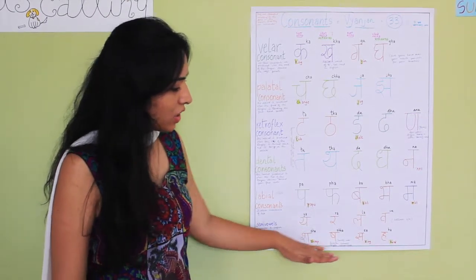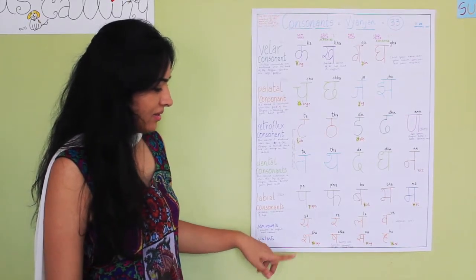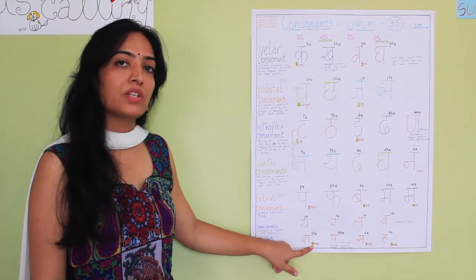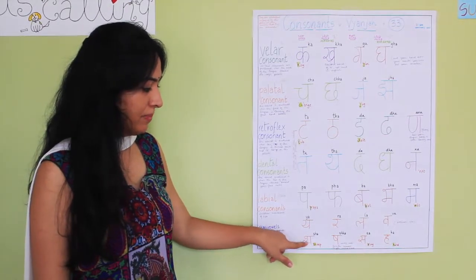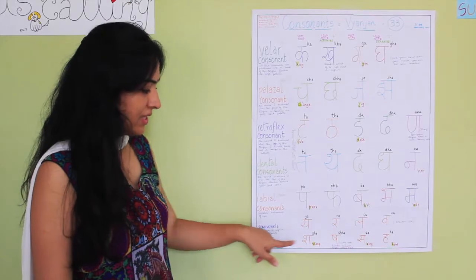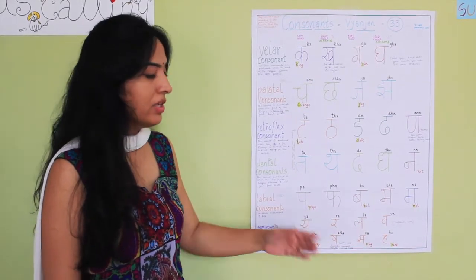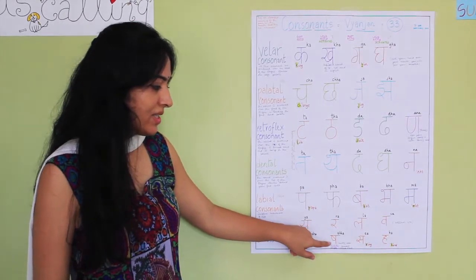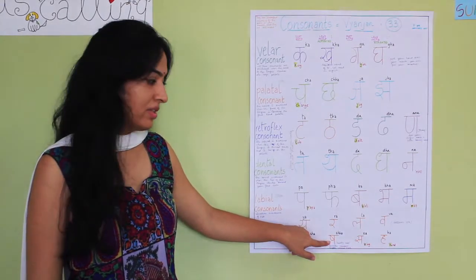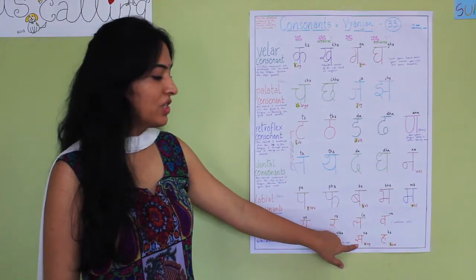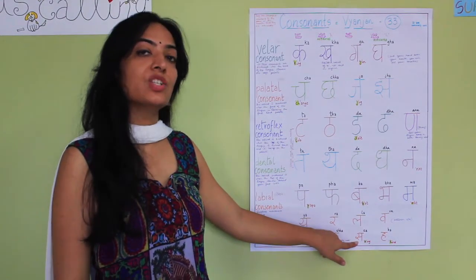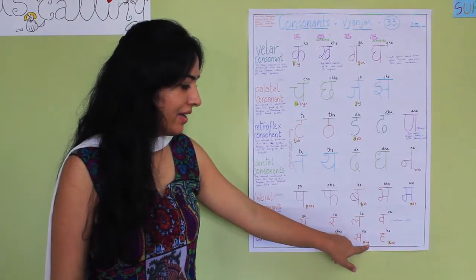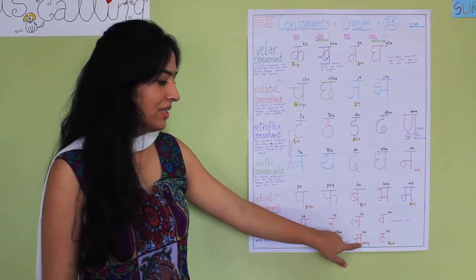The next column is sibilants. Now this one is Sh. If you see the word sheep, the Sh from the sheep is Sh, the first sibilant. The next one is the louder sound Sh, but this is hardly used and it is almost similar to the retroflex consonant. The next one is S which is absolutely like the English consonant S, the sing. If you take the word sing, the S from the sing.